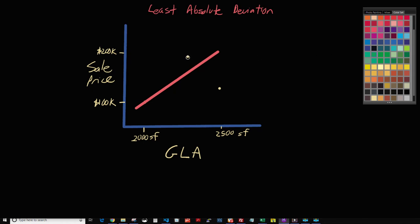Now what we need to do is calculate the residual. The residual is the difference between the actual sale price — the dependent variable — and the predicted sale price. So it's actual minus predicted. In this case we only have four data points: two that were used to draw the line, and two where we calculate the residuals.